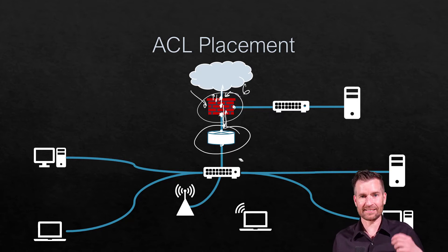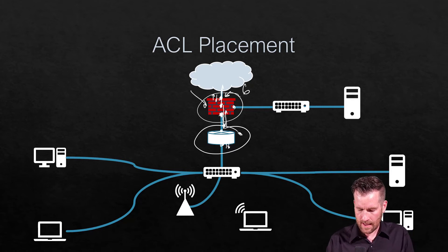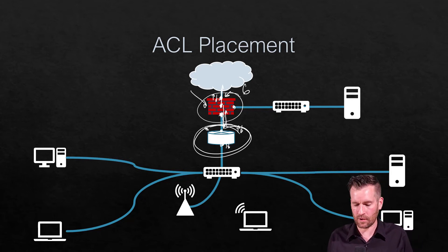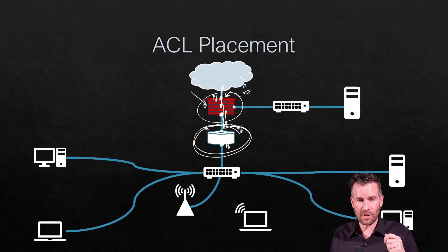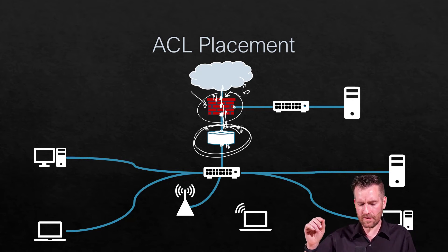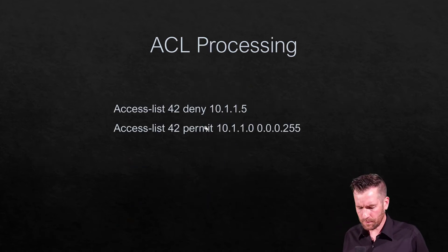A router with two interfaces can have each interface go in or come out — ingress or egress — so you can have up to four access control lists on a two-interface router. Whether you put the ACL on ingress or egress can drastically affect how that access control list functions, so you need to be careful about whether you're monitoring traffic going out of an interface or coming into it.